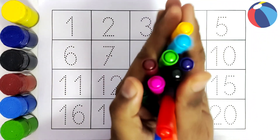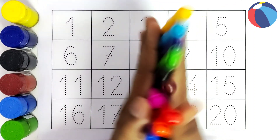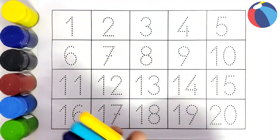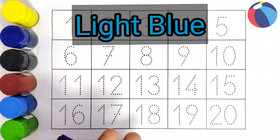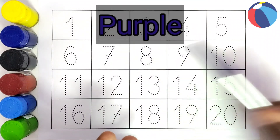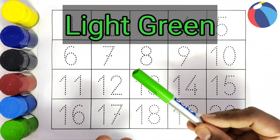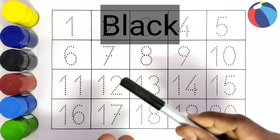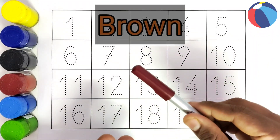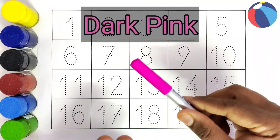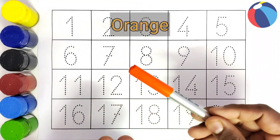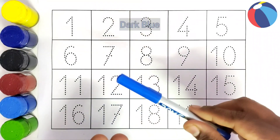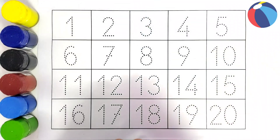With the color names: this is yellow color, this is light blue color, this is purple color, this is light green color, this is black color, this is brown color, this is dark pink color, this is red color, this is orange color, this is dark blue color, this is dark green color.